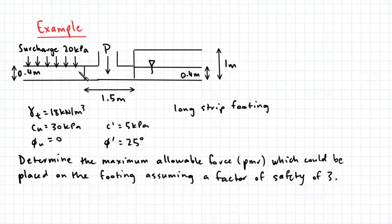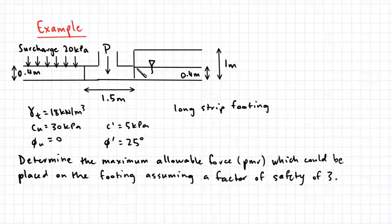Here we have a shallow footing which is below the surface of the soil and we have different soil conditions on either side of the footing. On the left side, the footing is at a depth of 0.4 meters below the surface with a surcharge of 20 kPa applied at the top. On the right, the footing lies at a depth of 1 meter below the surface and there's a water table at a height of 0.4 meters above the base of the footing.